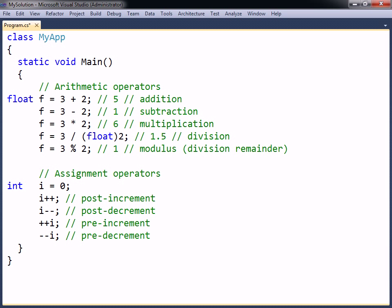Both of these operators can be used either before or after a variable. The result on the variable is the same whichever is used. The difference is that the post operator returns the original value before it changes the variable, while the pre-operator changes the variable first and then returns the value.